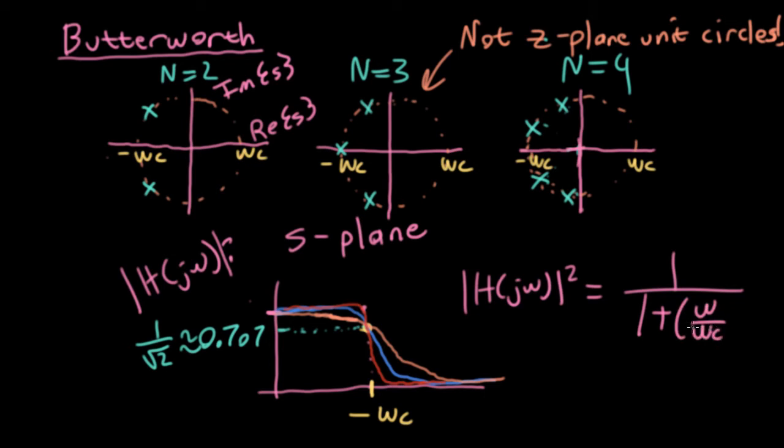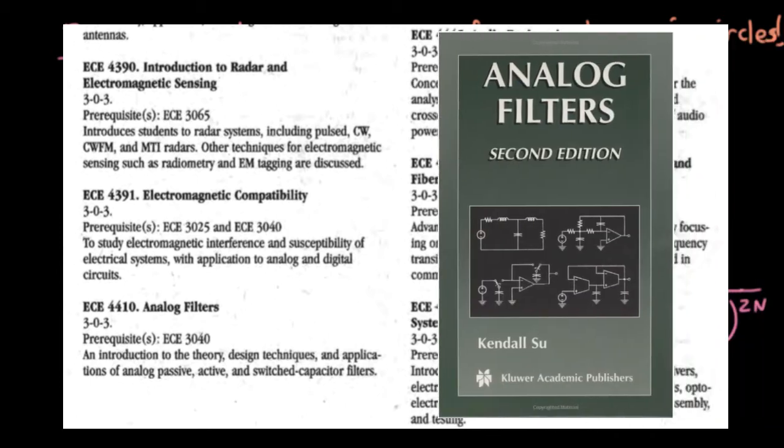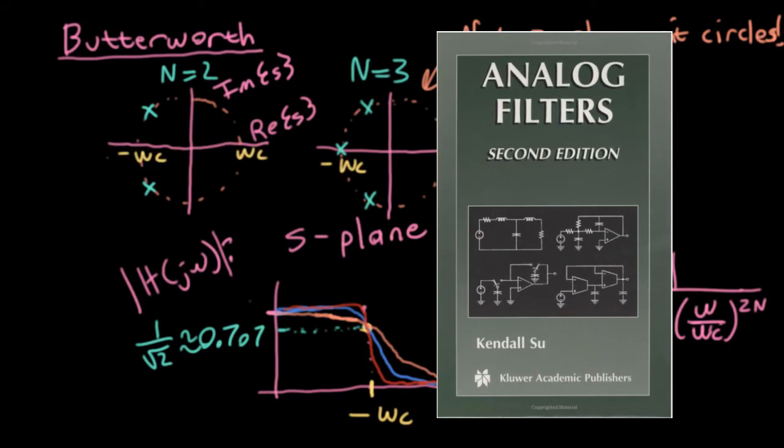The magnitude squared of a Butterworth filter response looks like 1 over 1 plus omega over omega c to the power of 2n. And if you factor this out, then you get this particular evenly spaced pole placement. There's entire books on filter design. There's entire courses on filter design. The one they had at Georgia Tech is no longer taught, but you can go find the textbook for it.